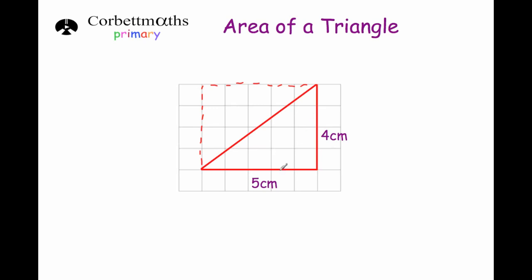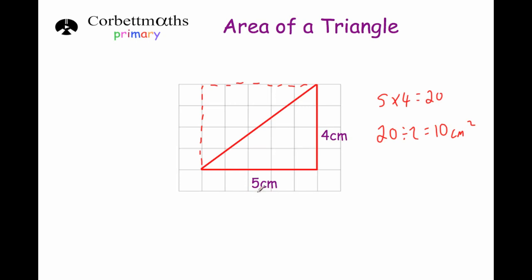To find the area of the triangle, I'd find the area of the whole rectangle. The rectangle is five centimetres long and four centimetres high, so I would do five times four which is equal to 20. The area of the rectangle is 20 centimetres squared, but the triangle is half of that. So I take 20 and divide it by two, giving me 10 centimetres squared. The area of this triangle is 10 centimetres squared — we took the base and the height, multiplied them together, then divided by two.